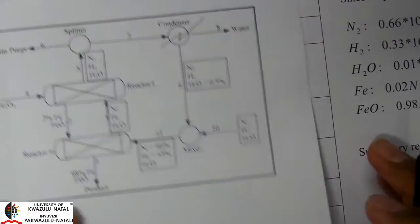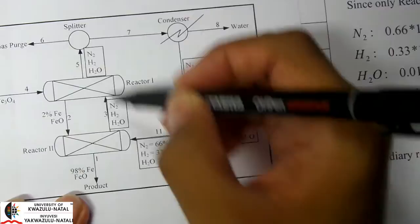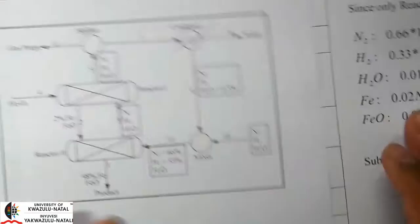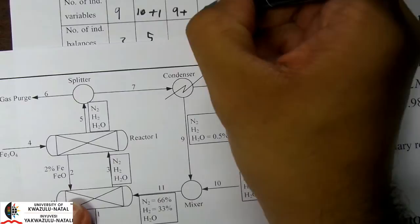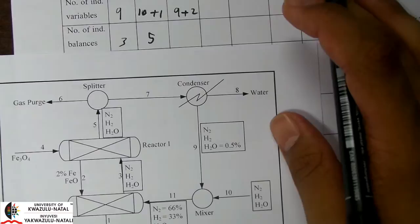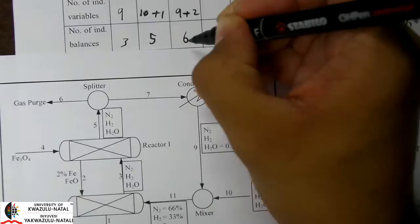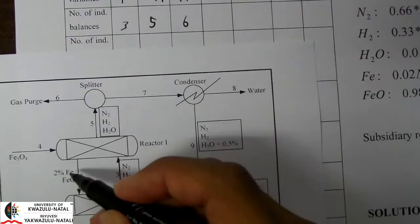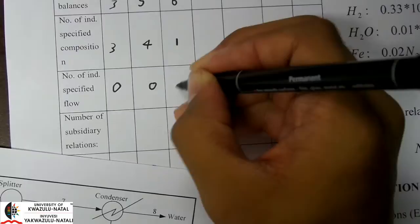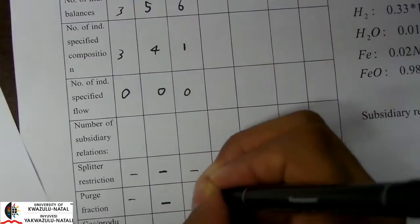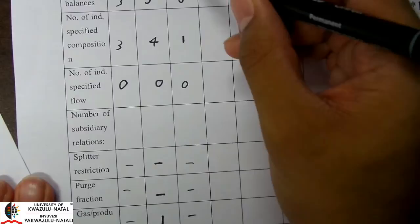For reactor 1: counting stream variables gives 9 plus 2 independent reactions, so 11. There are 6 components associated with this reactor, giving 6 balances. There is 1 specified composition, no flow specification, and no subsidiary relations. That gives a degree of freedom of 11 minus 6 minus 1 equals 4.